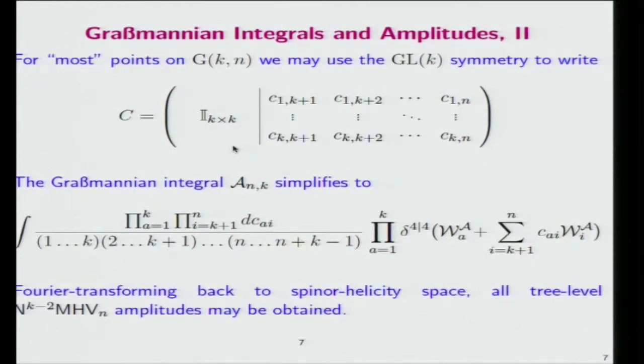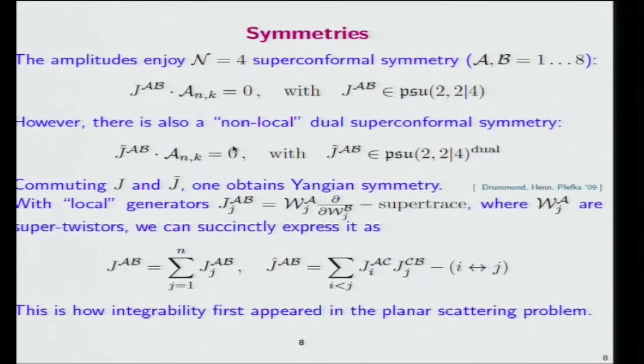Actually, for most points on this Grassmannian Gr(k,n), you can use some special coordinates. You put a k by k unit matrix here, and then things simplify. You do this half Fourier transform to spinor helicity space, and then you show that you get the original amplitude in spinor helicity space.